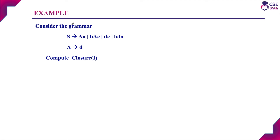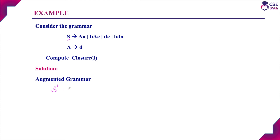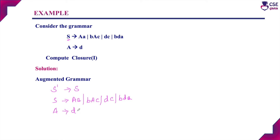Let's discuss one more example. Consider the grammar: S derives AA, BAC, BC, or BDA, and A derives D. For this given grammar, we need to compute closure of I. The first step is to write the augmented grammar. The augmented grammar adds a new production for the start symbol S: S' derives S. The remaining productions are written as-is: S derives AA, BAC, BC, or BDA, and A derives D.